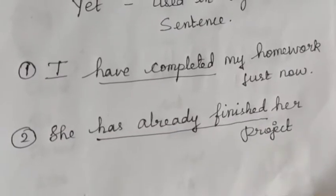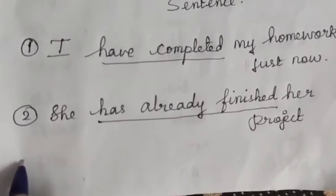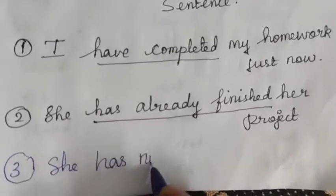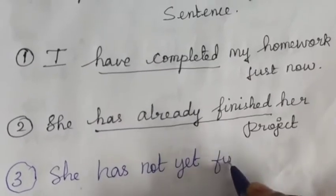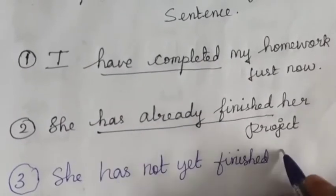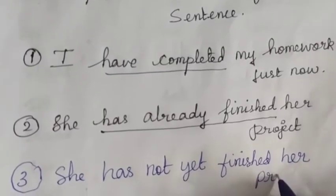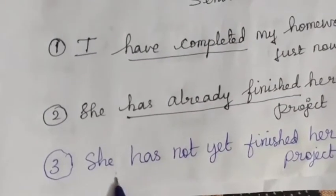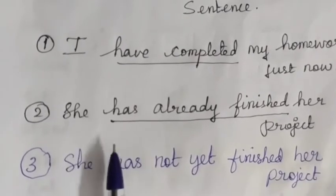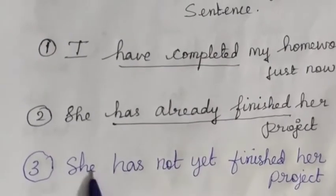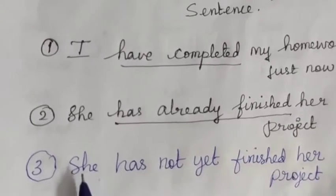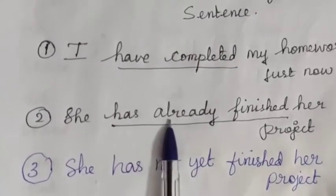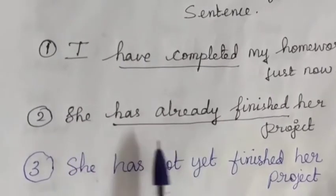When 'yet' is used, the sentence becomes negative. For example: 'She has not yet finished her project.' So 'yet' is for negative sentences, while 'already', 'just', and 'just now' are clue words for positive sentences.